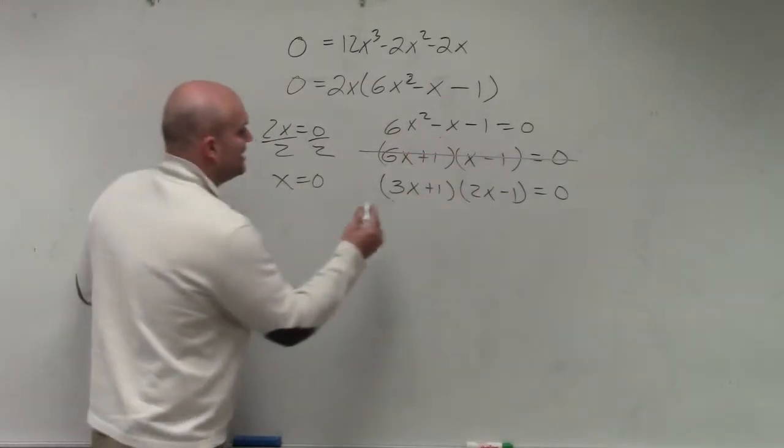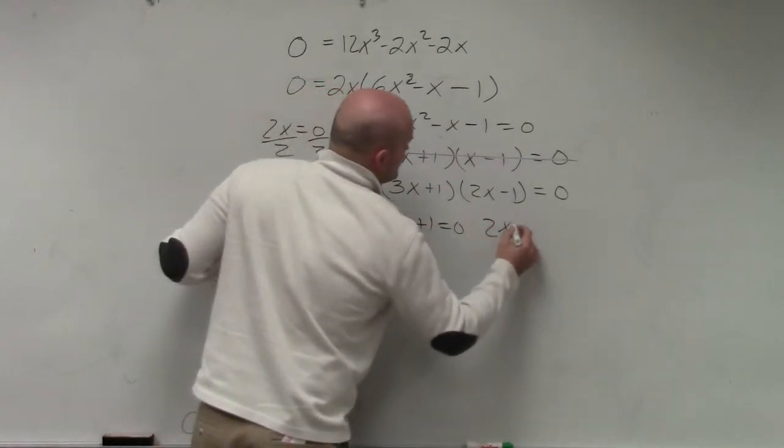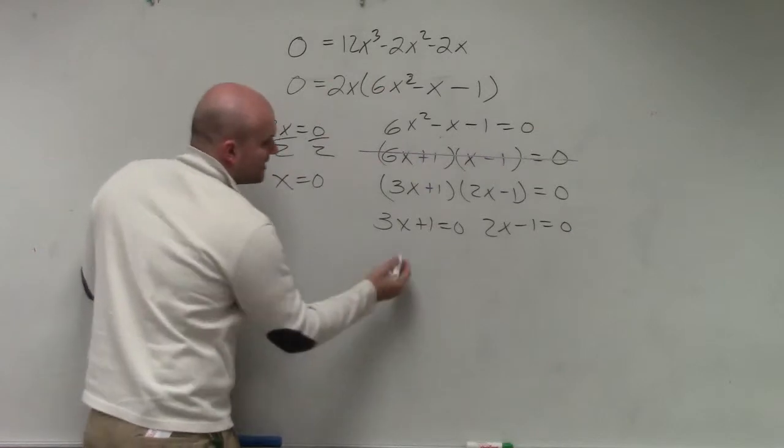So I can use zero product property again to say 3x plus 1 equals 0, or 2x minus 1 equals 0. Now I can solve.